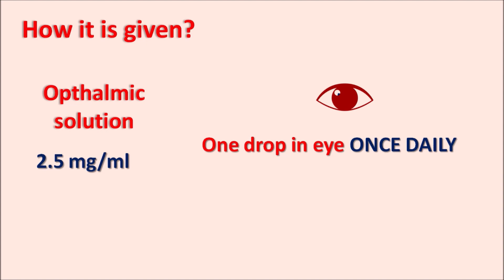Alcaftadine is a topical antihistamine used as an ophthalmic solution for the treatment of allergic conjunctivitis. This drug blocks H1 receptors, thereby reducing the allergic response produced by histamine. It can also reduce stimulation of eosinophils as well as reduce chemotaxis. By all these actions, Alcaftadine can reduce the symptoms of allergic conjunctivitis such as itching, redness, blurred vision, and swelling of the eye. Chemically, this drug is an imidazo-benzazepine derivative. When this drug is administered, the contact lens should be removed to avoid damage, and the tip of the ophthalmic solution should not touch the eye in order to avoid injury and contamination.